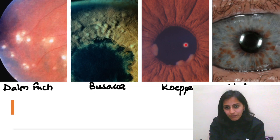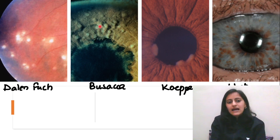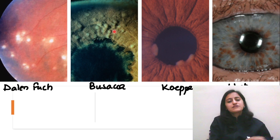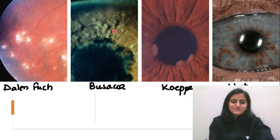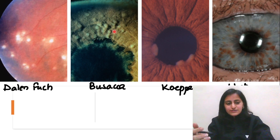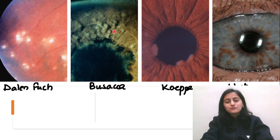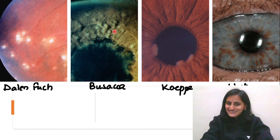So Coppase is at the pupil periphery, and at the surface of the iris it is Basakas. Those were the important nodules in ophthalmology. I hope this helps you to remember these easily.